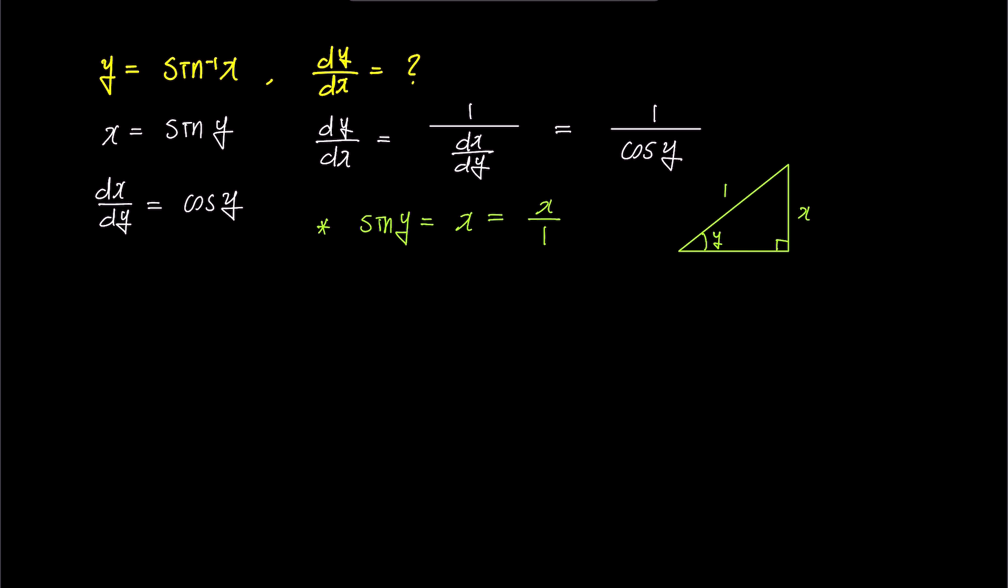Using the Pythagorean theorem to find the length of the adjacent side, we get square root 1 minus x squared. Now, let's find out how we can express cosine y, which we need, using this right triangle. Since cosine y is adjacent over hypotenuse, it becomes square root 1 minus x squared.